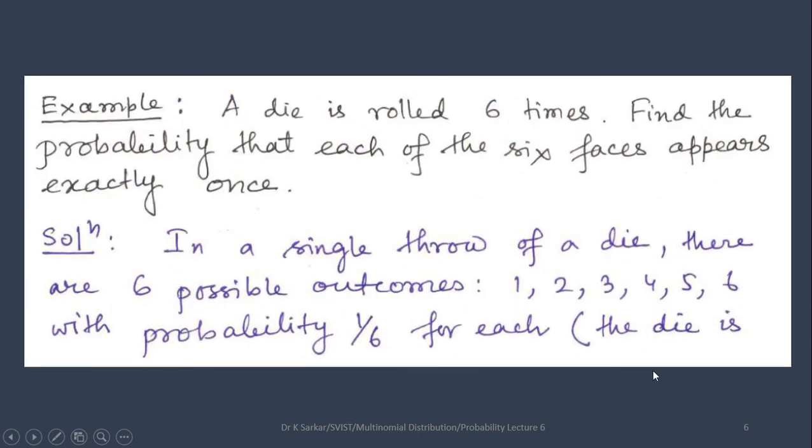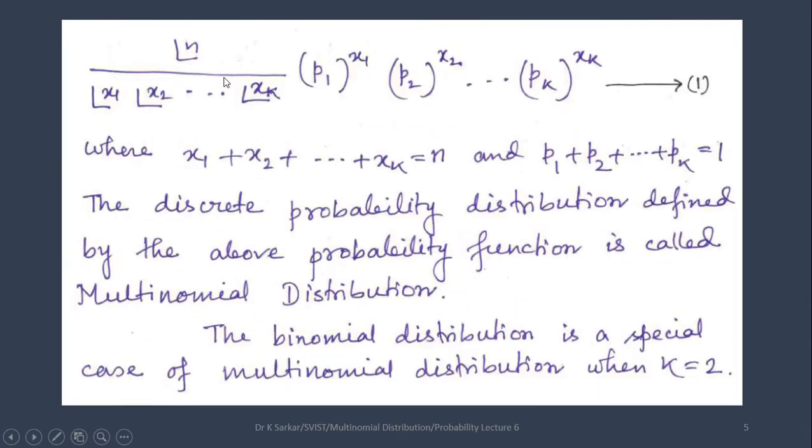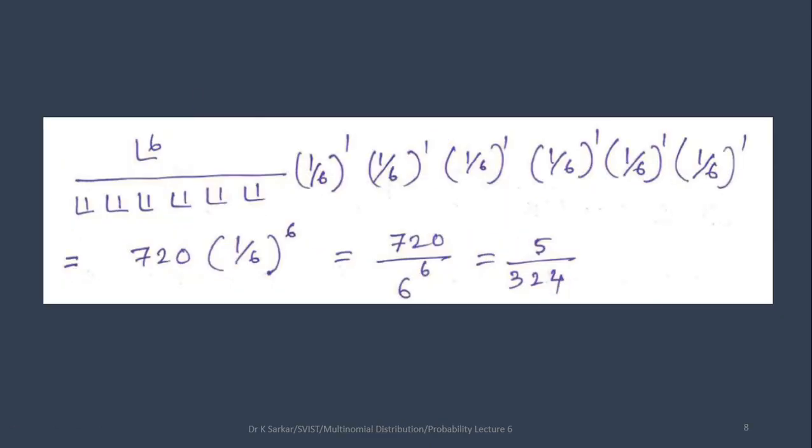Substituting all these values in expression 1, we get factorial 6 divided by factorial 1, 6 times and 1 by 6 power 1, 6 times. After calculation, we are getting the result 5 by 324.